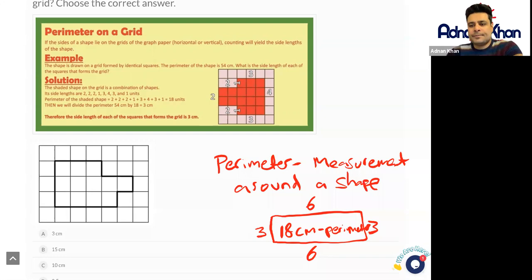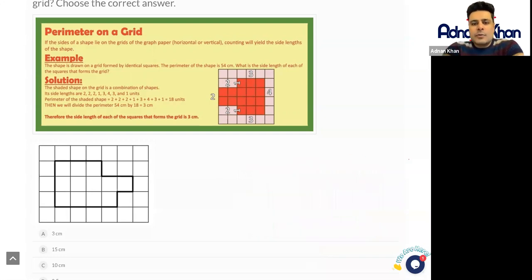So in this case let's work out how many squares we have. First of all, so we have 1, 2, 3, 4, 5, 6, 7, 8, 9, 10, 11, 12, 13, 14, 15, and 16 squares.